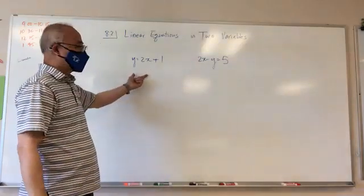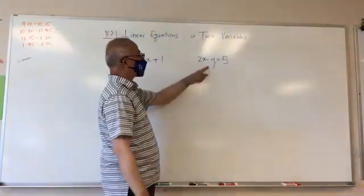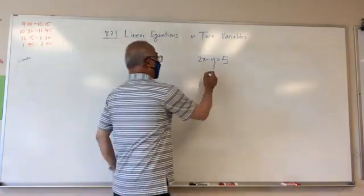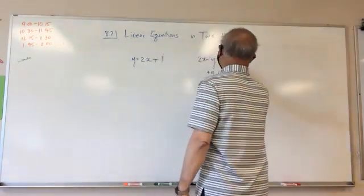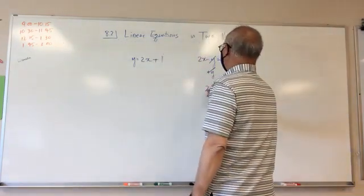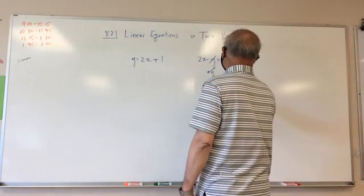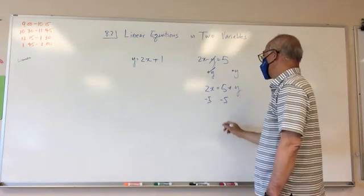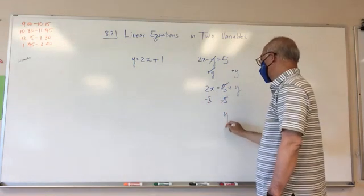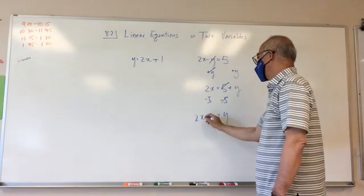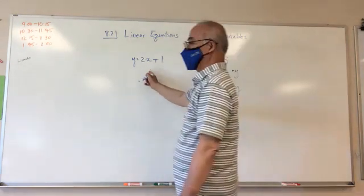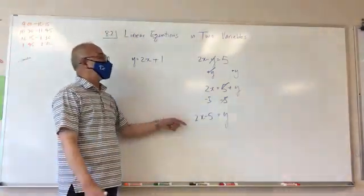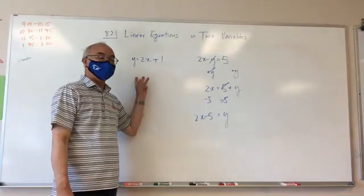This kind of looks like the standard form, right? In order to make two x minus y equals five look like slope-intercept form, I can add y to both sides. The y cancels out and I get two x equals five plus y. Then subtract five from both sides, and I get y equals two x minus five. So with a little manipulation I can get there.